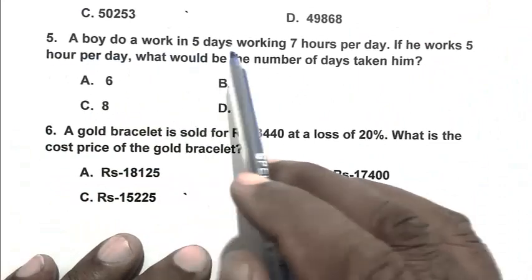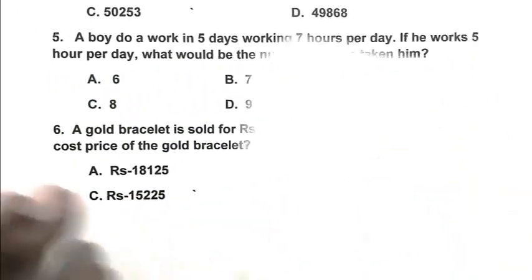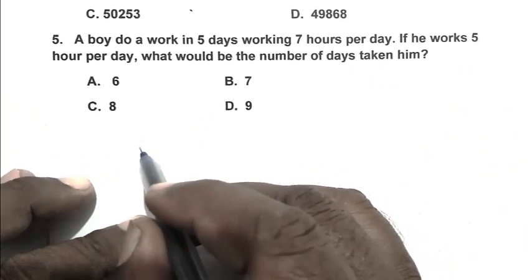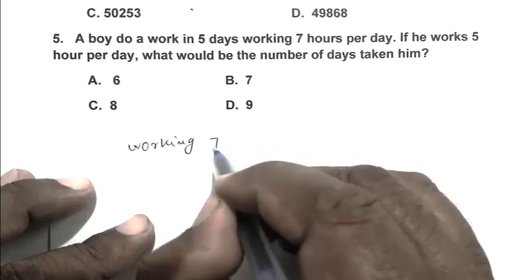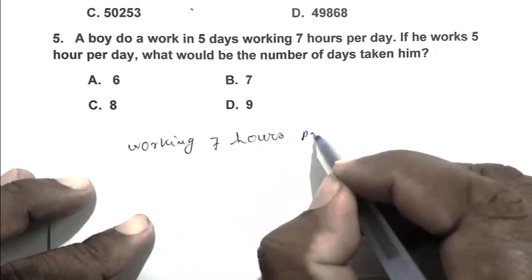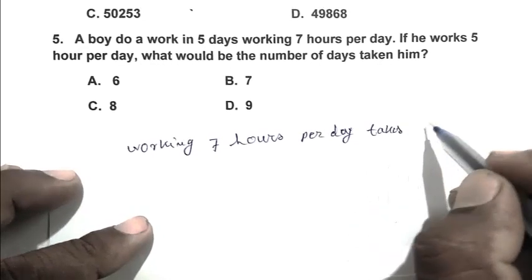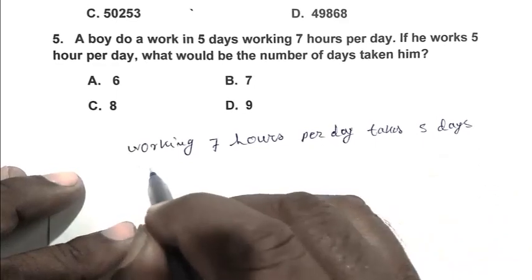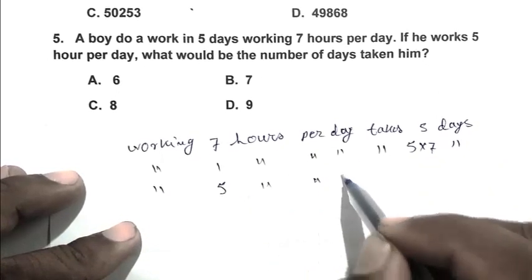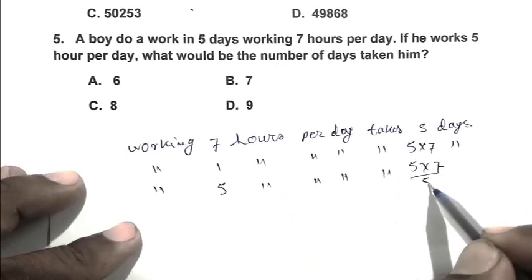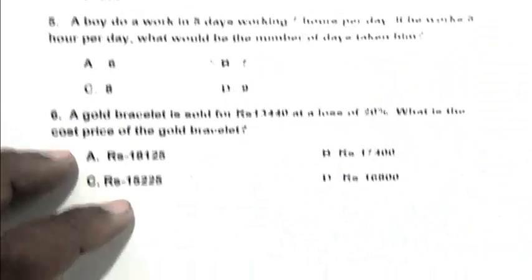Question number five: a boy does work in five days working seven hours per day. If he works five hours per day, what would be the number of days taken by him? Using the unitary method: working seven hours per day takes five days; working one hour per day takes five multiplied by seven days; working five hours per day takes 35 divided by 5, that is 7 days. B is the right answer.